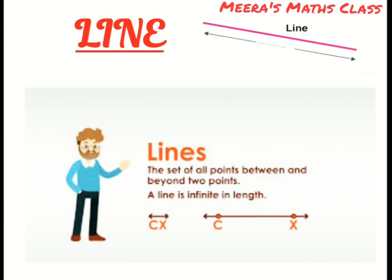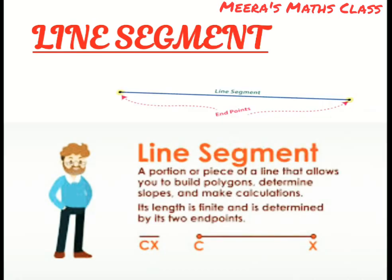The next one is line segment. What is line segment? It is also a line but it is having two end points. That means it stops there. It is not extended on either side. It is having two end points.